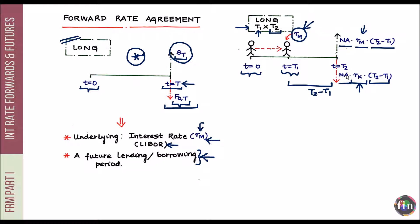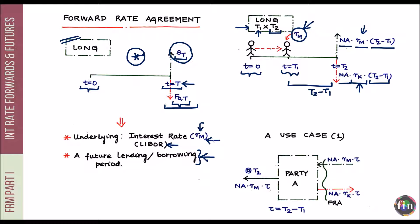The FRA is an OTC transaction. To design it, you must decide: the notional amount (NA), the times T1 and T2 — which automatically determines τ = T2 − T1, the lending/borrowing duration — and the underlying rate, which is typically LIBOR.